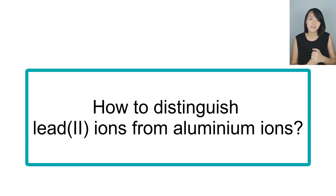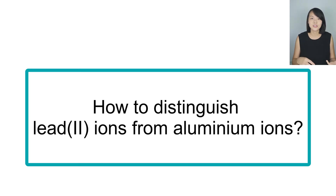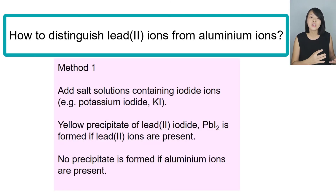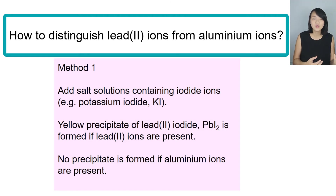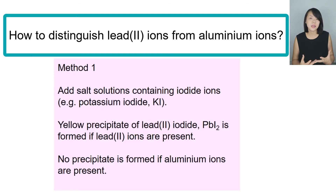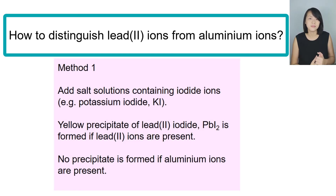There are two ways to distinguish lead(II) ions from aluminium ions. The first way is to add a solution containing iodide ions — for example, potassium iodide. If the unknown solution contains lead(II) ions, you will see a yellow precipitate form. This yellow precipitate is lead(II) iodide.